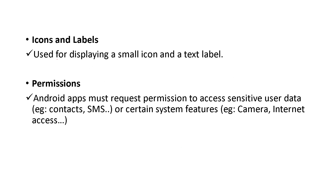Next are icons and labels. For example, in an application like WhatsApp, an icon will be there for WhatsApp and below that the text 'WhatsApp' is written. So an icon is a symbol and a label is the text written below it. Next is permissions — Android apps must request permissions for accessing contacts, SMS, camera, internet access, etc.